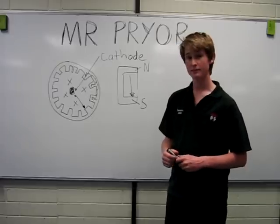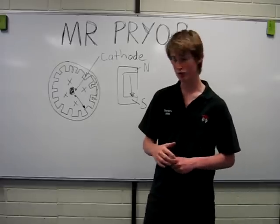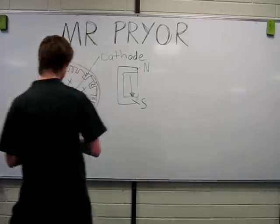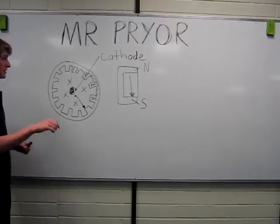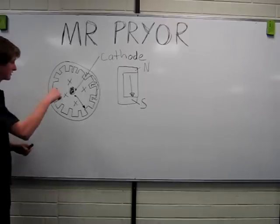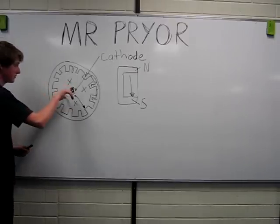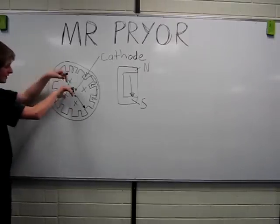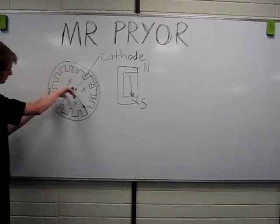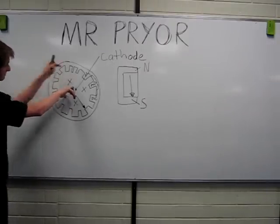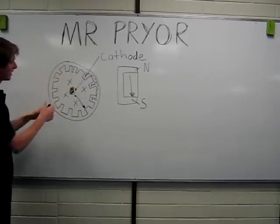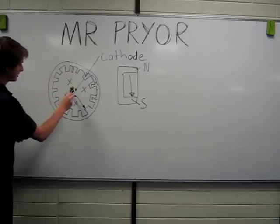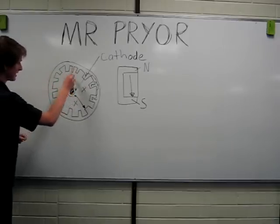So, using our right-hand curl rule — the magnetic field is travelling into the board — the right-hand curl rule states that the electrons would travel clockwise, like that.